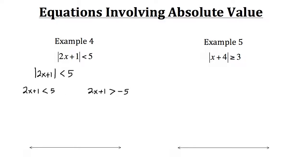Now if you remember, whenever you switch the sign for an inequality — for example, like multiplying by negative 1 — then you need to flip the inequality sign. So here, since it was originally less than 5 and now we changed it to negative 5, we had to flip the sign.